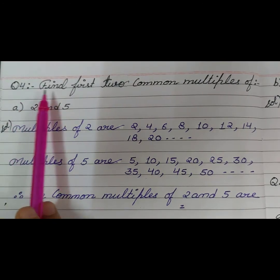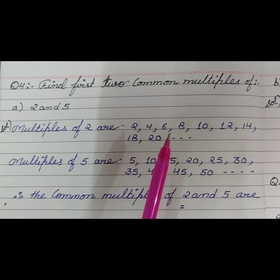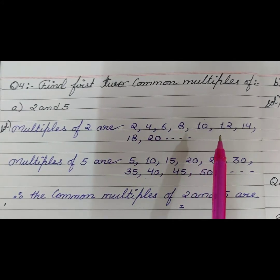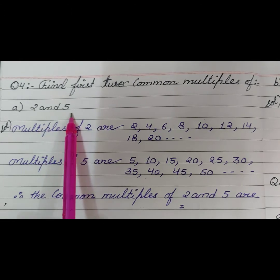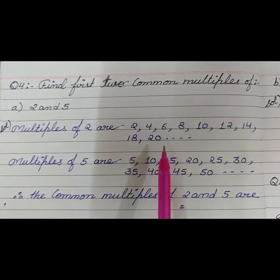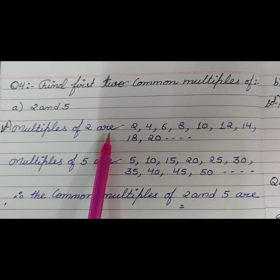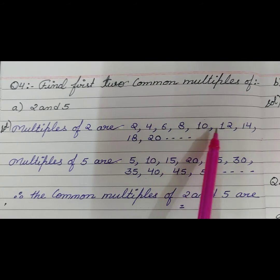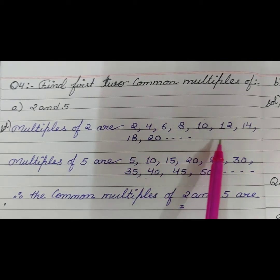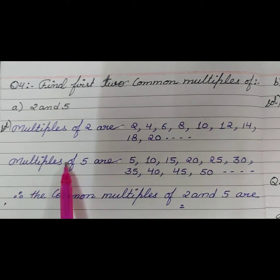Question number 4: Find the first 2 common multiples. Part A: 2 and 5. We know how to find multiples. In this question we have to find common multiples. First we will find the multiples of the given numbers 2 and 5, then find the common multiples among them. Multiples of 2 are: 2, 4, 6, 8, 10, 12, 14, 18, 20, and so on, because multiples are infinite.